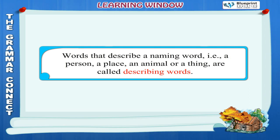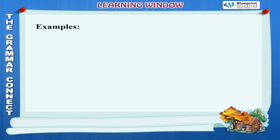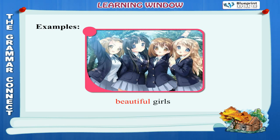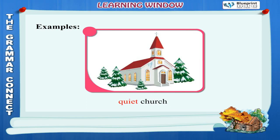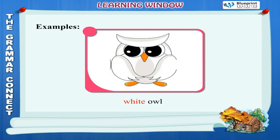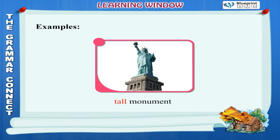Words that describe a naming word — that is a person, a place, an animal, or a thing — are called describing words. Examples: Beautiful girls, quiet church, white owl, tall monument.